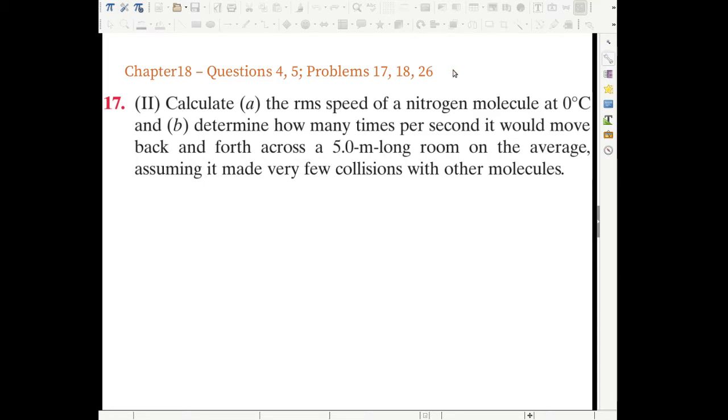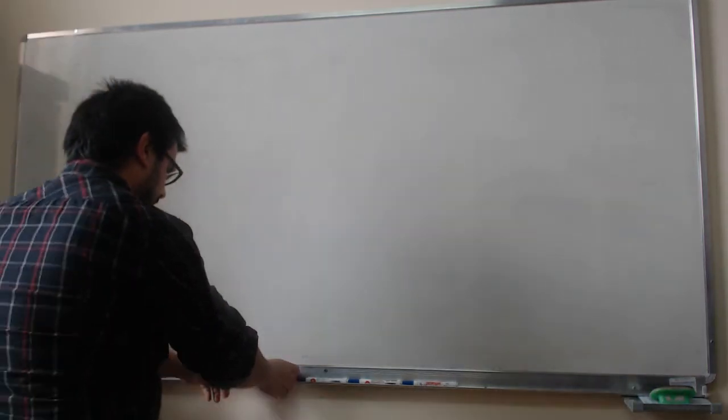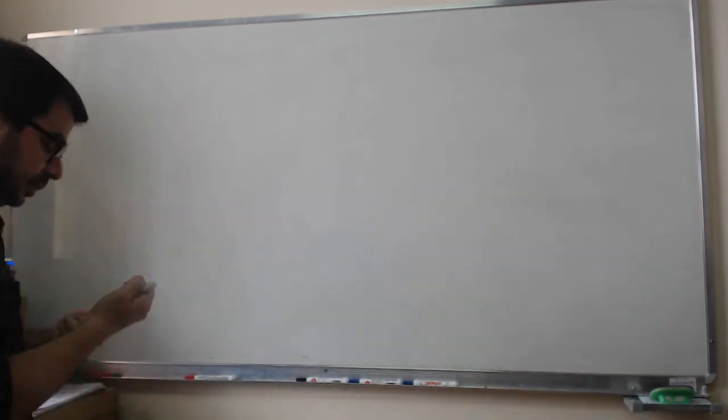So in problem 17, we are asked to calculate the root mean square speed of a nitrogen molecule at 0 degrees Celsius, and then to determine how many times per second it will move back and forth across a 5 meter long room on the average, assuming it made very few collisions with the other molecules.